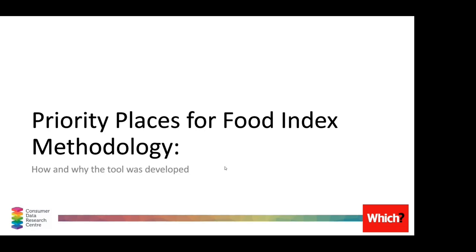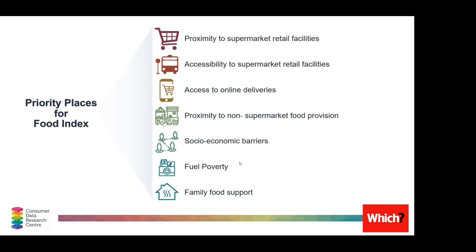Thanks Emily. I'll be talking about the methods and the underlying data that goes into the tool, and then Pete will go on to demo the tool. The Priority Places for Food Index was developed alongside Which. We started collaborating only a few months ago and what we wanted to do was identify the places and people most at risk of food insecurity this winter. The index has a lot of data underlying it — these fall into seven domains and provide insight for small area geographies.